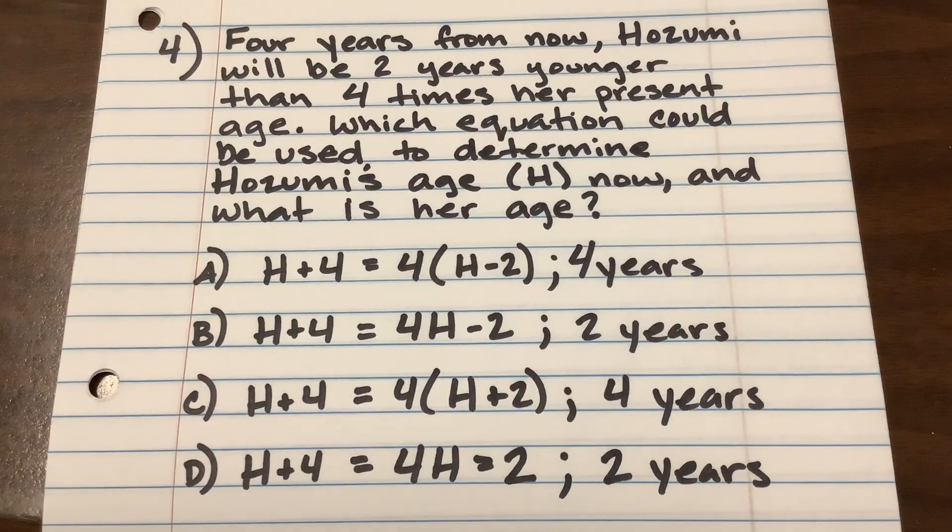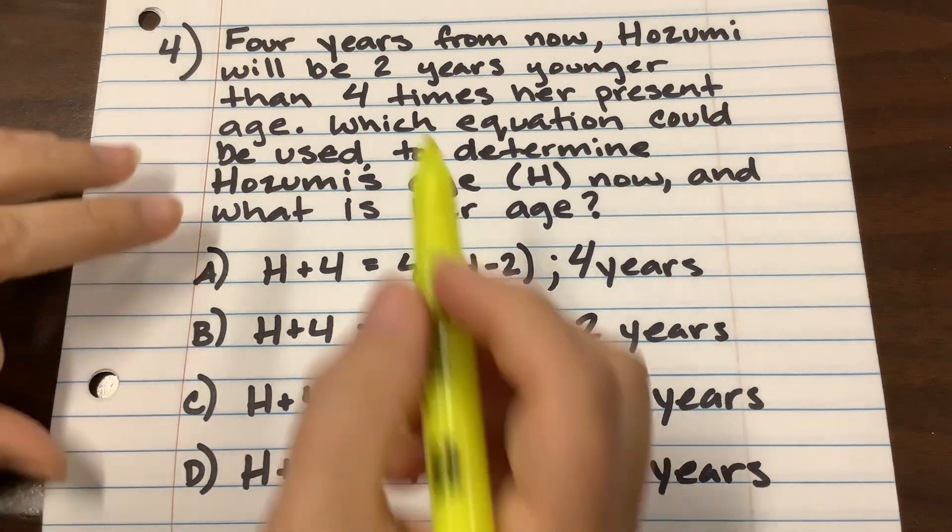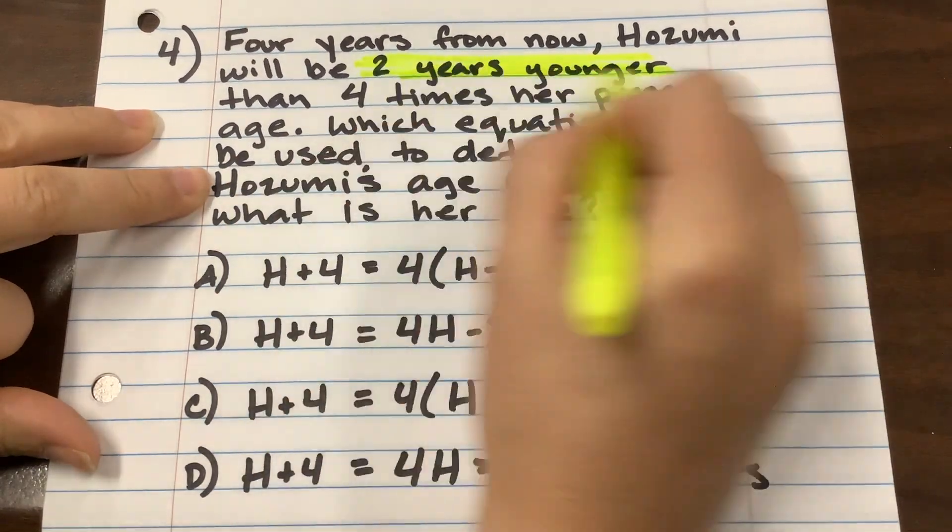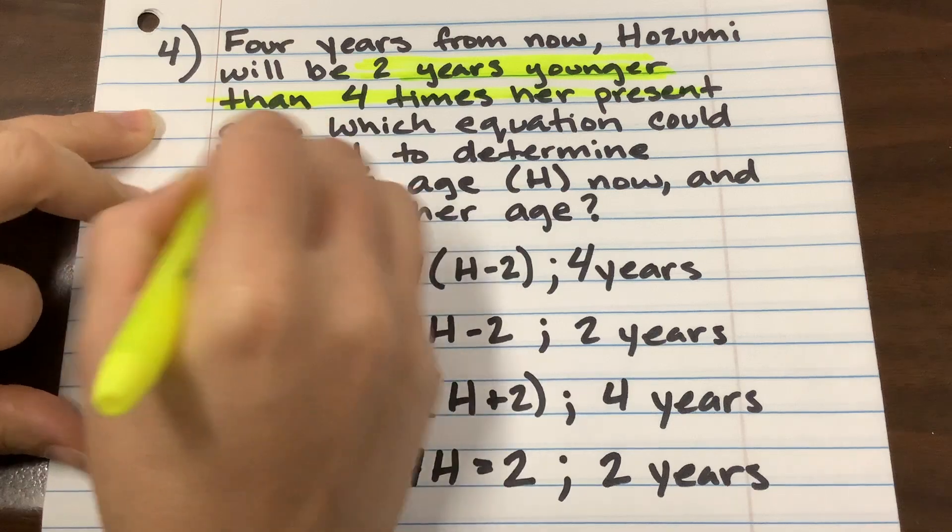Alright, so this is number four from your study guide. I just rewrote it on a piece of paper. It says four years from now, Hozumi will be two years younger than four times her present age.